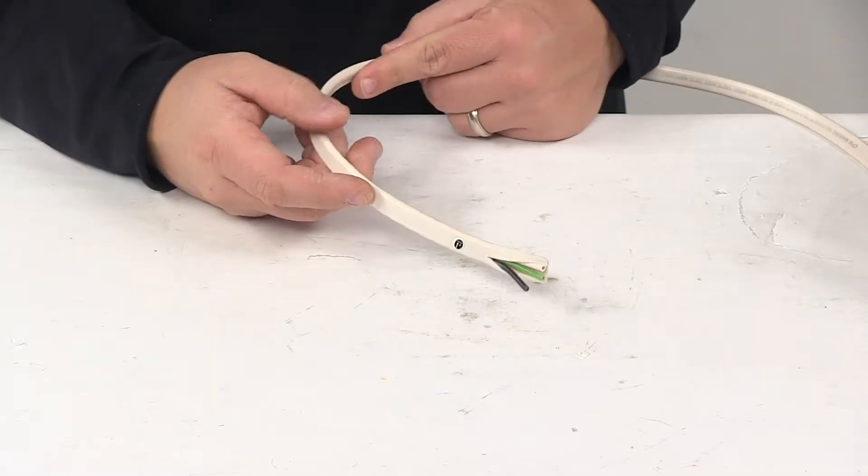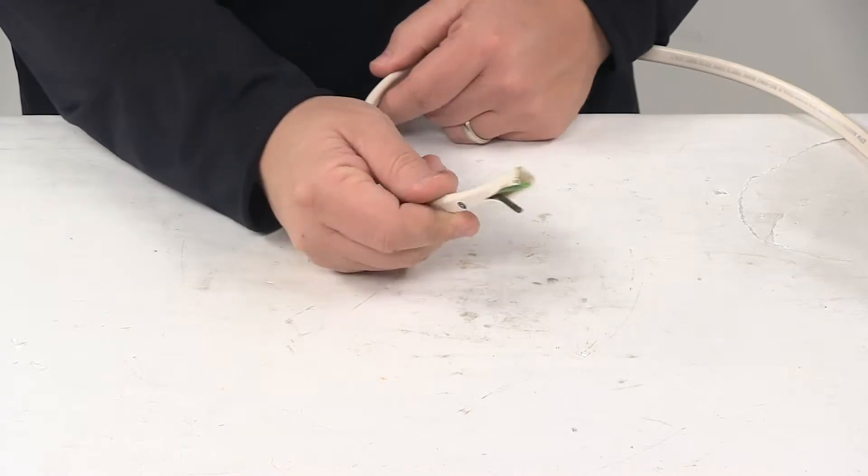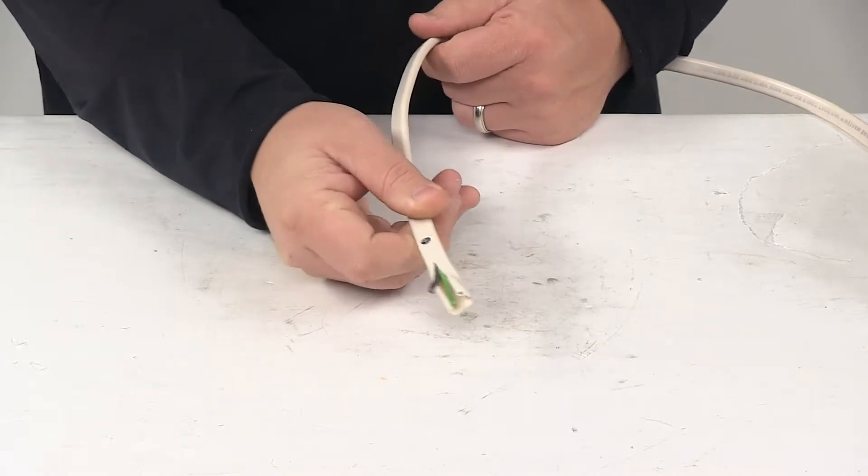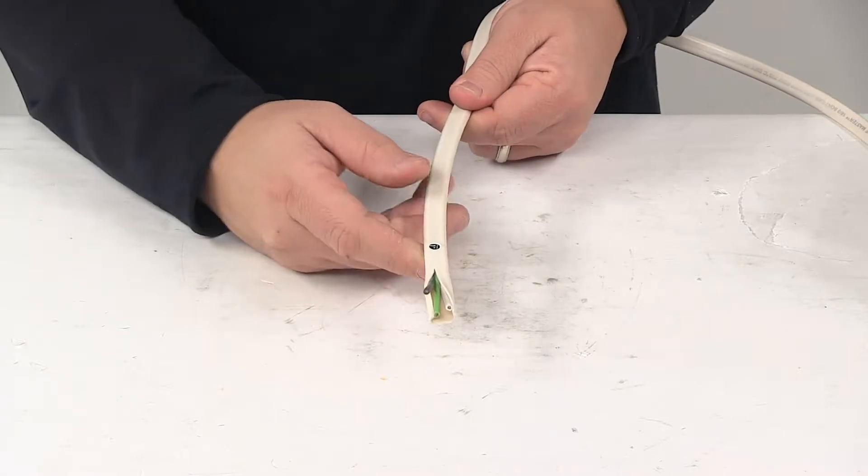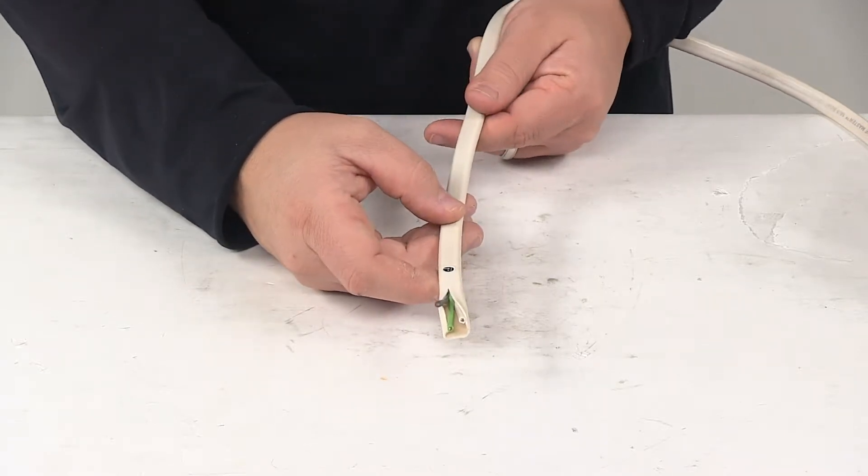Today we're taking a look at the triplex boat cable with the white outer jacket. Now the triplex boat cable is constructed of tinned and stranded copper and designed for marine applications.